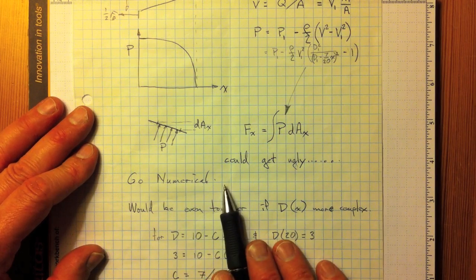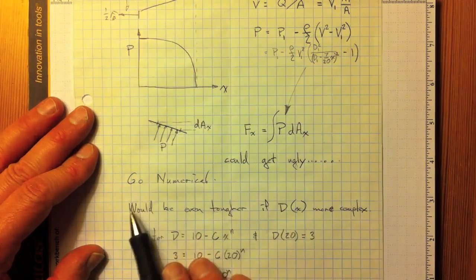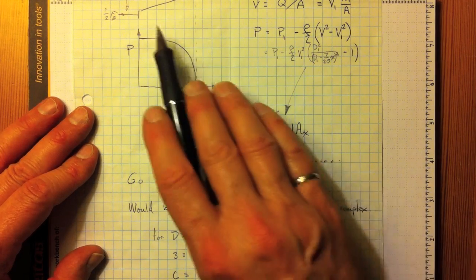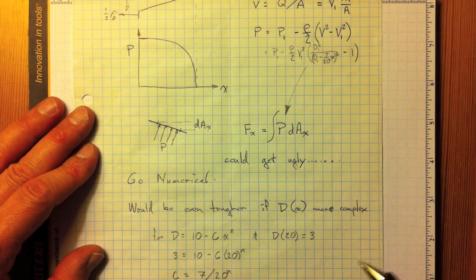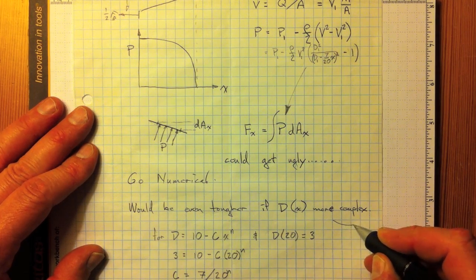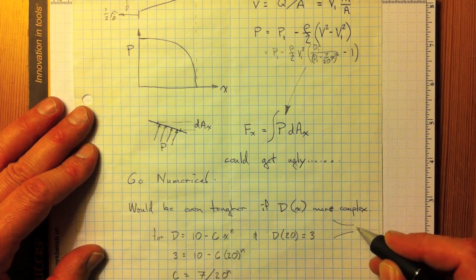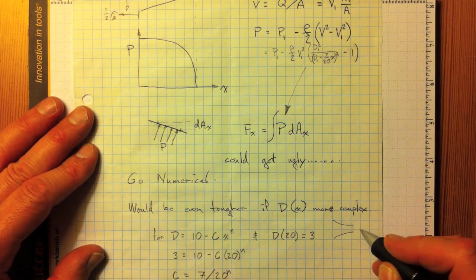I would go numerically with this. It would be even tougher if we had a more complicated diameter structure, if the nozzle wasn't just conical, but if it perhaps had a geometry something more like this, which is more what I might expect of the interior cross-sectional area of that nozzle.